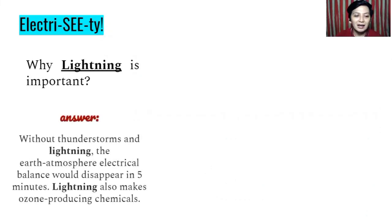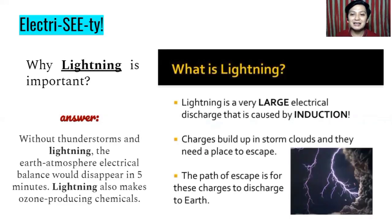So it is important because without thunderstorms and lightning, the earth's atmosphere electrical balance could disappear in five minutes. And lightning also makes ozone producing chemicals. So why is lightning important? Again, because in this topic, lightning is a very large electrical discharge that is caused by induction. Charges build up in storm clouds and they need a place to escape or discharge to earth. So lightning is caused by charging by induction. Do not forget that, so next time you see lightning, it is a blessing rather than a curse.